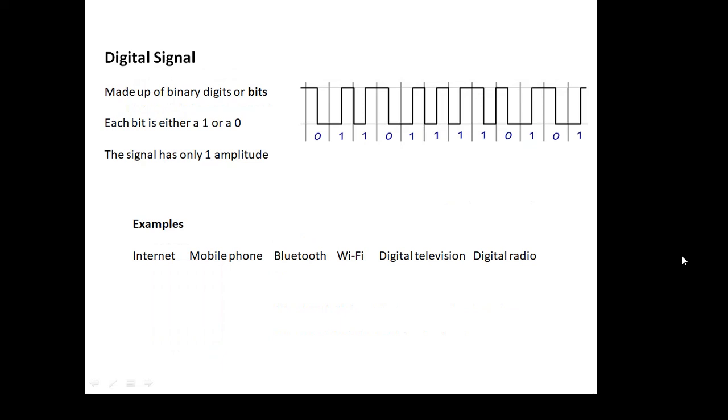A digital signal, however, is made up of binary digits or bits. And a binary digit is either a one or a zero. So a digital signal is either one or zero. It only has one amplitude. It's either on or off. It's up or down. It's this or that. It's a binary thing. A one or zero. Lots of examples of digital signals. The internet is digital. Mobile phone signals are digital. Bluetooth, Wi-Fi, digital television, digital radio. They're all digital signals.